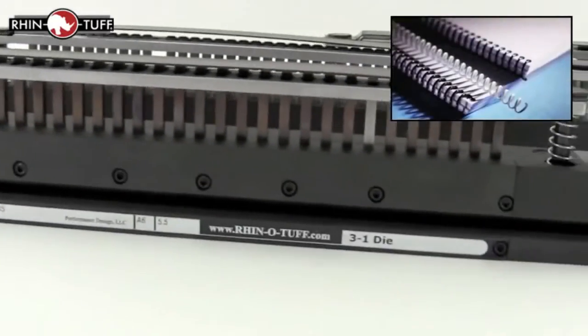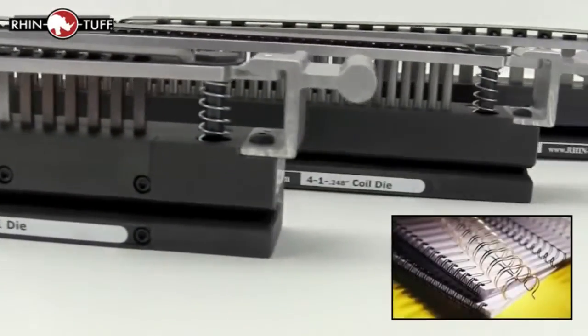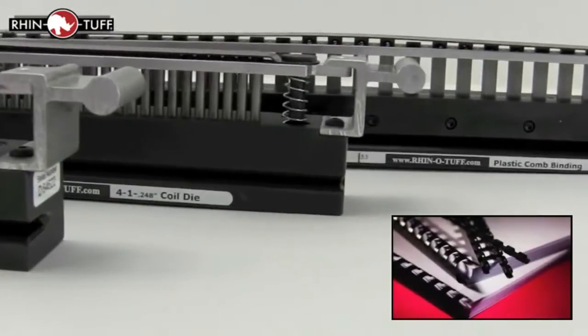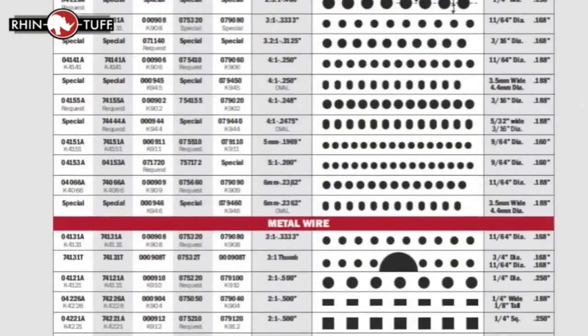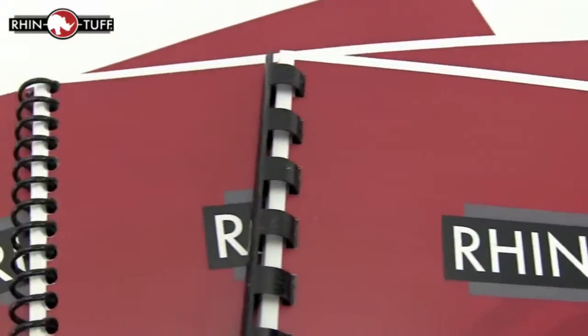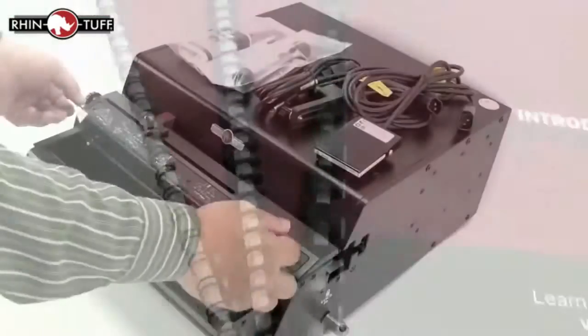So whatever bind, punch pattern or look you're going for for your business, this can be one machine that handles all of your needs. Each die is priced separately and there are dies for plastic comb, wire loop, plastic coil, velibind and three hole loose leaf.